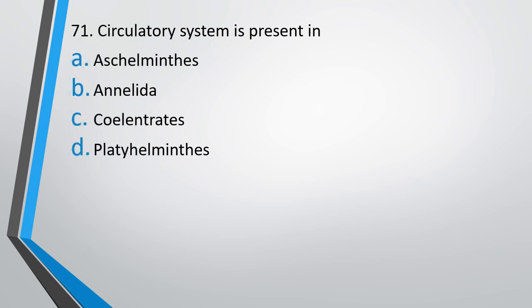Question number 71: Circulatory system is present in — option A: Aschelminthes, option B: Annelida, option C: Coelenterates, or option D: Platyhelminthes. The correct answer is option B, Annelida. From Annelida onwards, every phylum has a circulatory system.